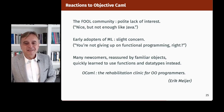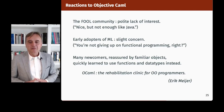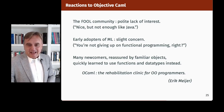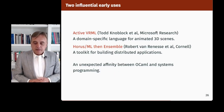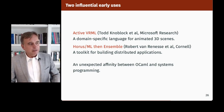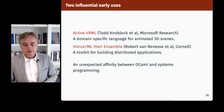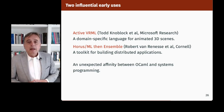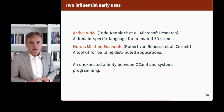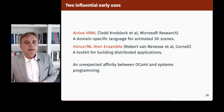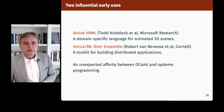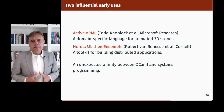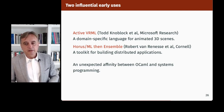That led Eric Meijer to call OCaml 'the rehabilitation clinic for object-oriented programmers.' That's also when we started to have various users outside the relatively small French and INRIA community. Two influential early uses were: first, ActiveVRML, a project at Microsoft Research to develop a domain-specific language for animated 3D scenes; and second, Horus ML (later the Ensemble project), developed at Cornell and later at IBM as a toolkit for building distributed applications. These two examples were important because they managed to convince INRIA management that Camel was a serious language, not just a toy for implementing provers.